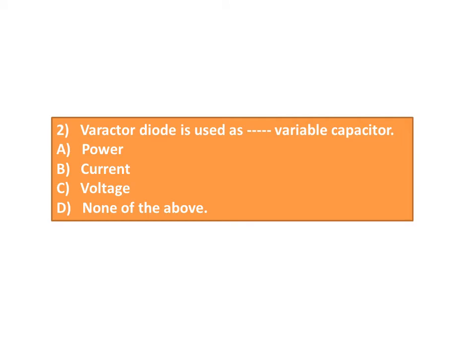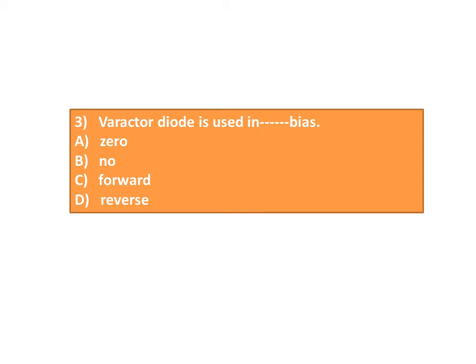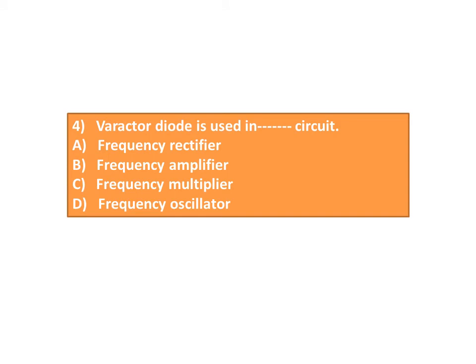Question 2: The Varactor Diode is used as a ___-variable capacitor. A. Power, B. Current, C. Voltage, D. None of the above. Question 3: The Varactor Diode is used in ___ bias. A. Zero, B. No, C. Forward, D. Reverse.